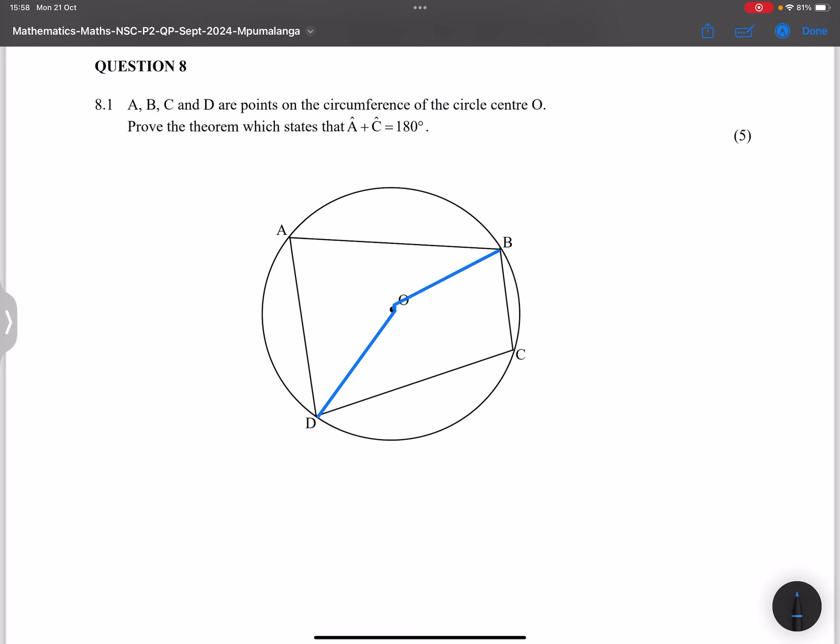And in this case, we were given that that is the center, so that means we know that DOB. Let's talk about the constructions first. So construct radius OD and OB.